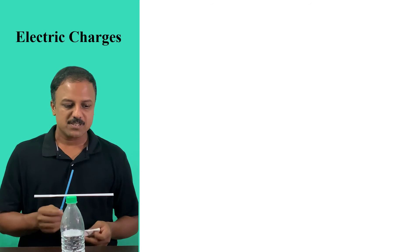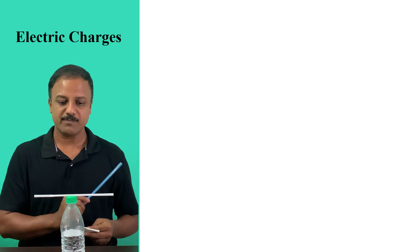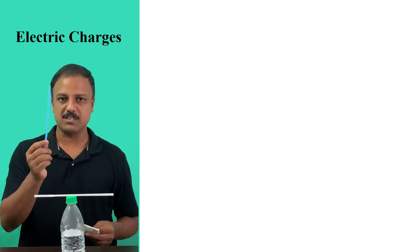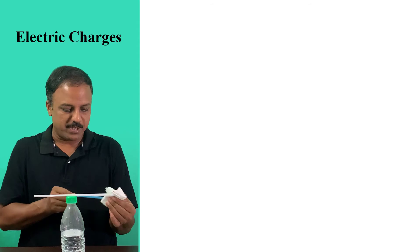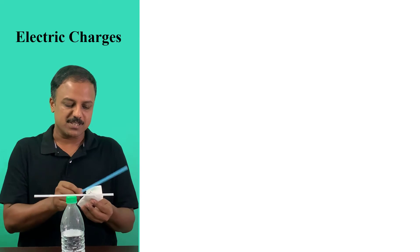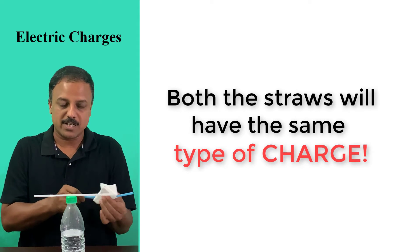Now in this experiment, I have this plastic straw here, which I just rubbed it with that paper. I'm going to repeat that process with another straw. I'm just rubbing it with the paper. So what will happen is I will get the same type of charge in both the straws, right?